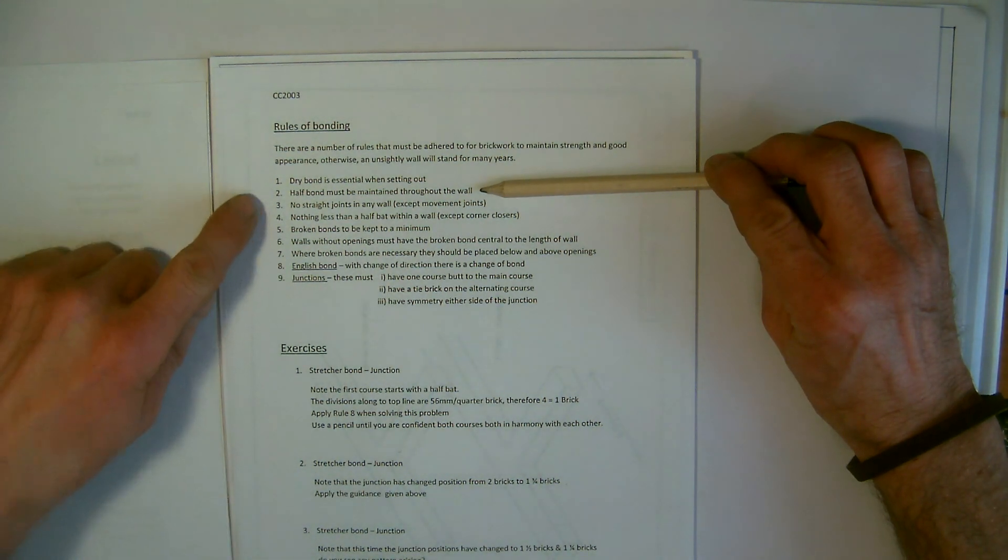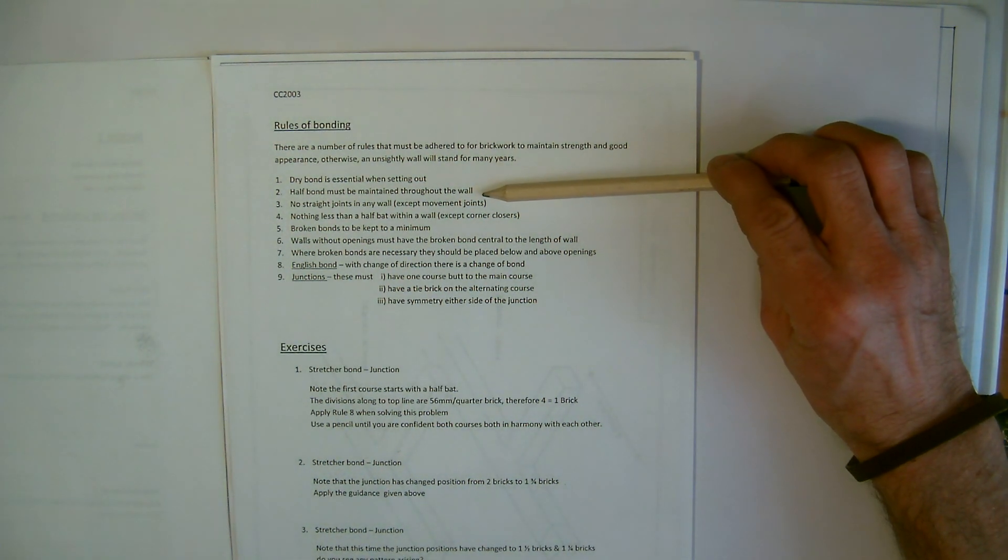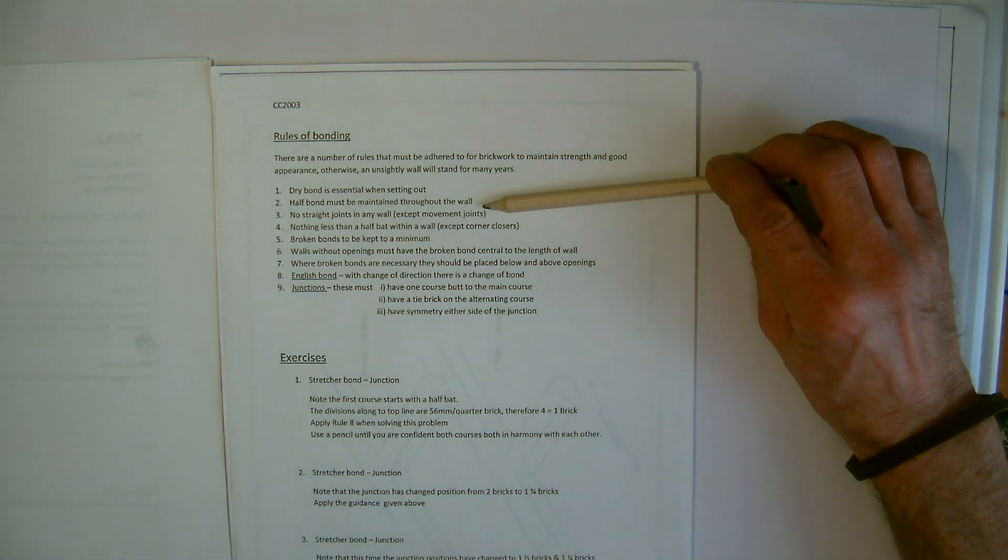We have here on rule two: half bond must be maintained throughout the wall. Again, this is just with stretcher bond, quarter bond if we were talking about English bond, but those bonds have similar rules.